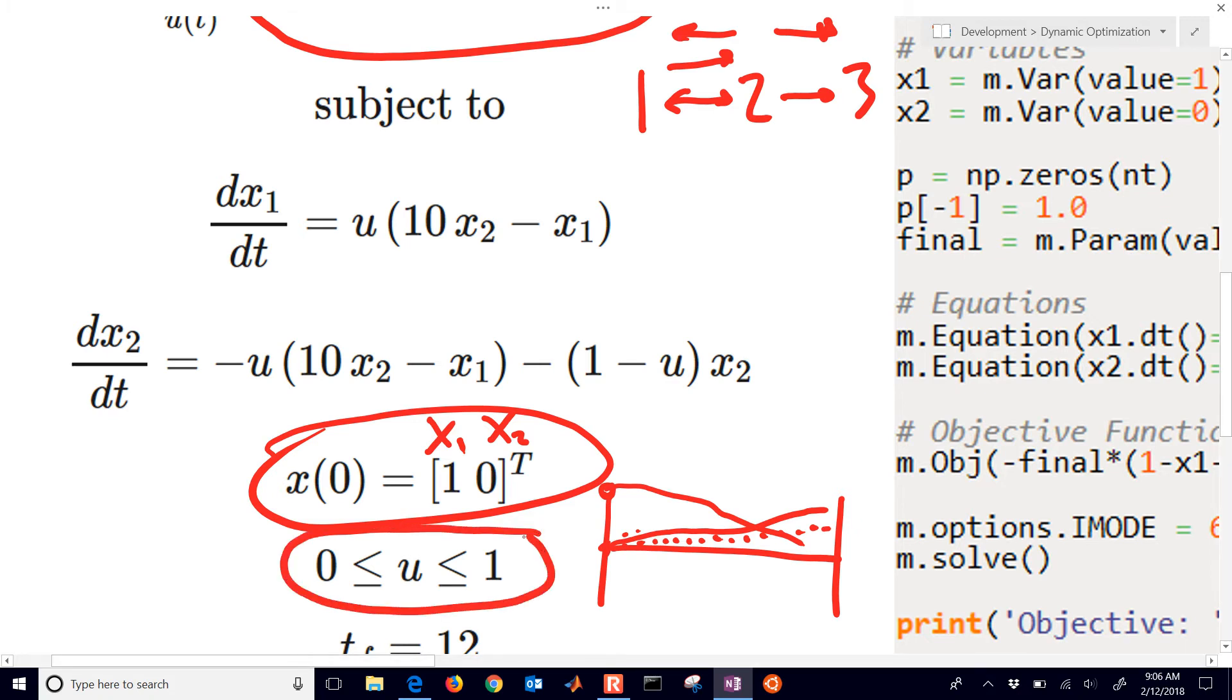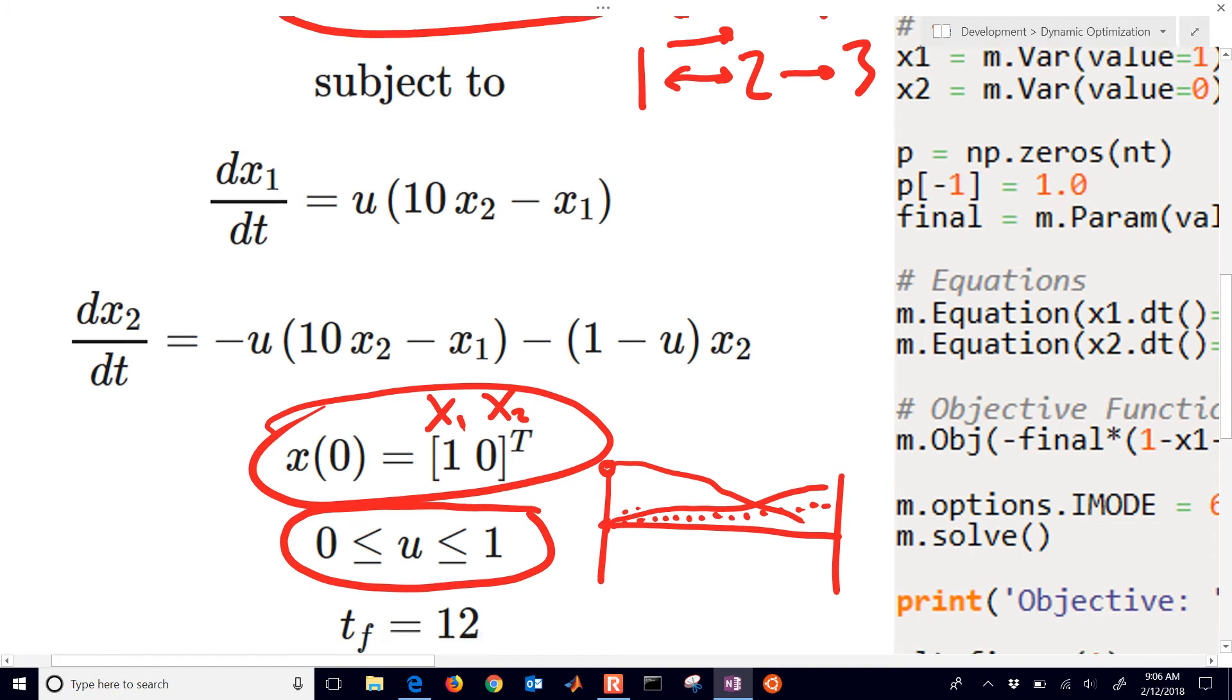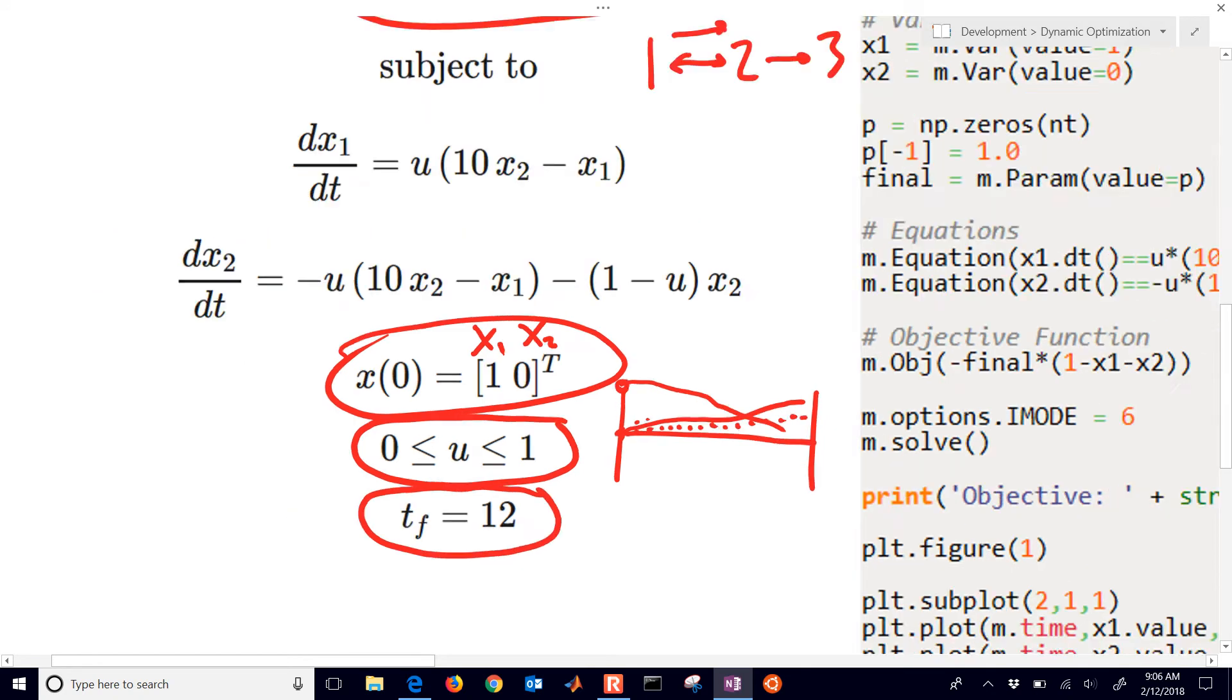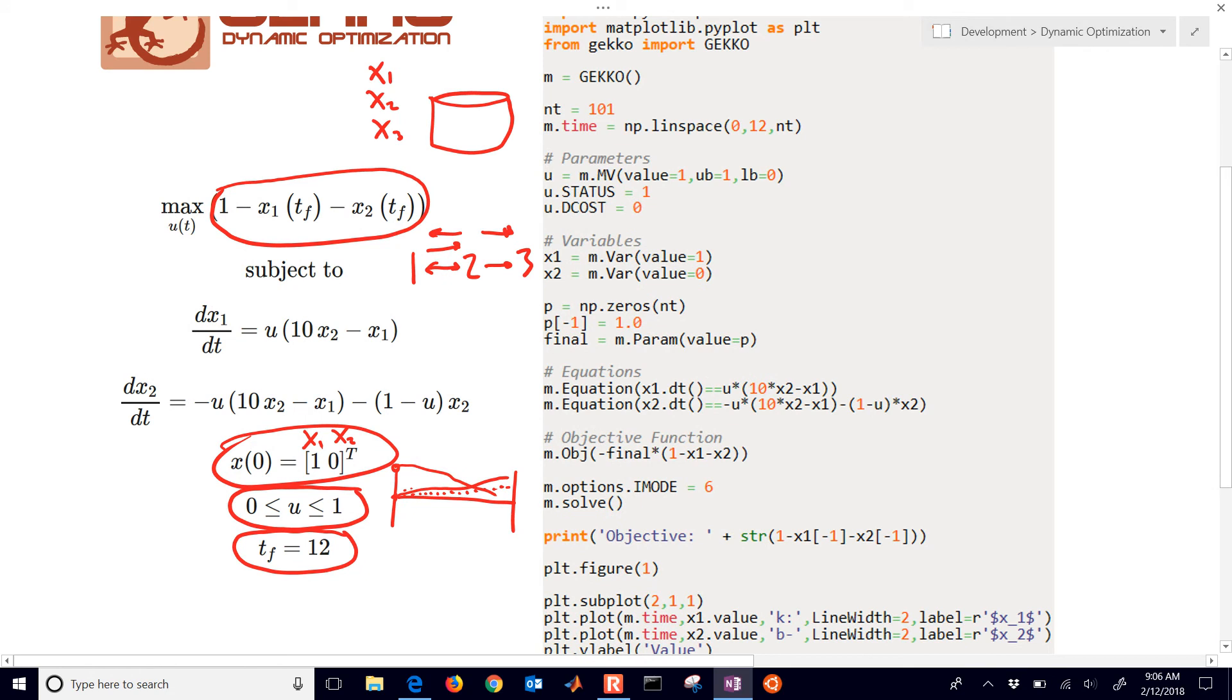Our u value is constrained between 0 and 1. It could be like a temperature, a flow rate, something like that. And we're going to go out to a final time of 12. So to set up and solve this in Gecko, here are the commands.